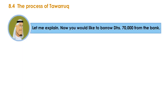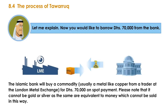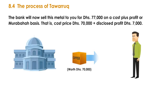Let me explain. You would like to borrow 70,000 dirhams from the bank. The Islamic bank will buy a commodity — usually a metal like copper — from a trader at the London Metal Exchange for 70,000 dirhams on spot payment. Please note that it cannot be gold or silver, as these are equivalent to money and cannot be sold in this way.